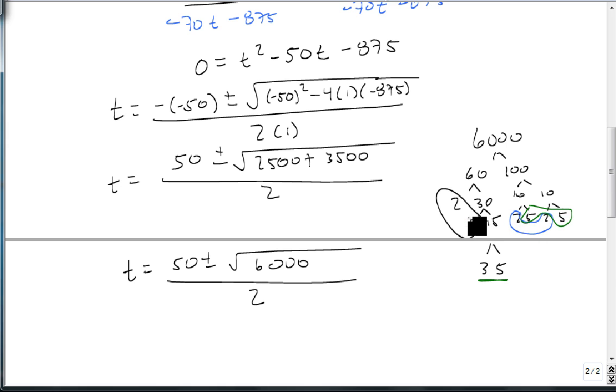So we're going to get 4, 2 times 2, times 5 is 20, so 20 comes out. 50 plus or minus 20 root 15, all over 2.